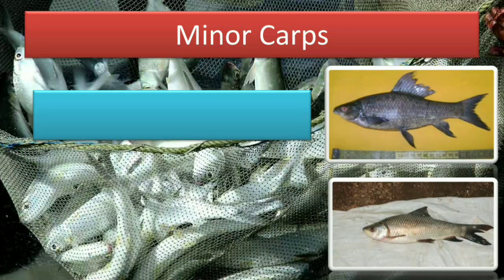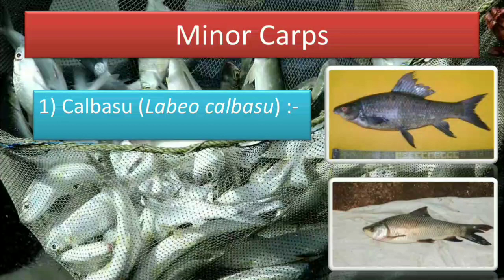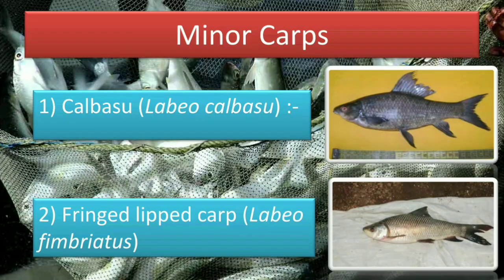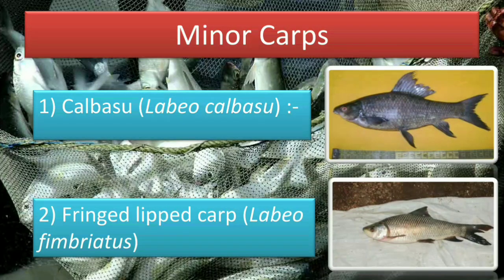Now minor carp. The first is Catla basu, also called Labeo calbasu — its scientific name is Labeo calbasu. The second is fringe-lipped carp, also called Labeo fimbriatus. From the diagram we can differentiate them: Catla basu is a little dark or black, whereas fringe-lipped carp Labeo fimbriatus is not black but somewhat whitish and silvery.